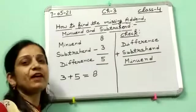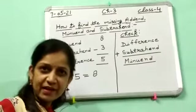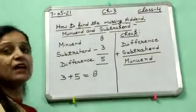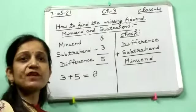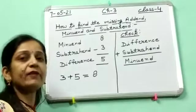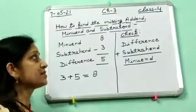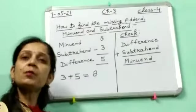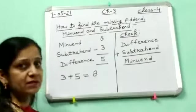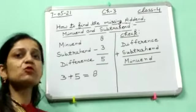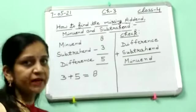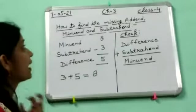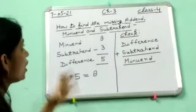Good morning children. Welcome to your master online class. Yesterday I have sent you the work of exercise 3.2, in which there are sums in which you have to borrow and subtract. That type of sums you have already studied in your previous class. Now today I will explain you how to find the missing addend.